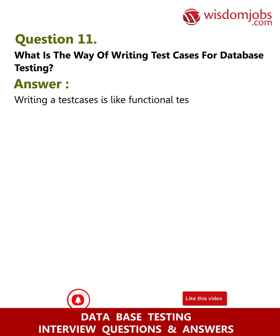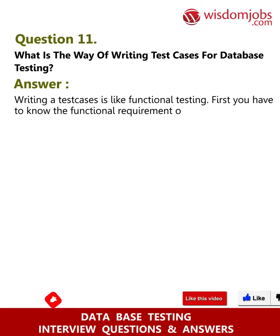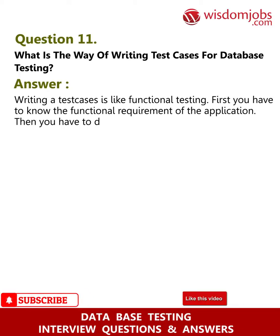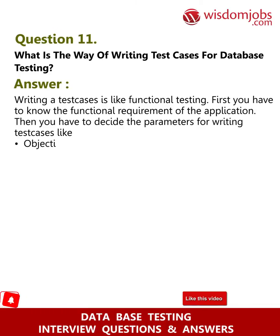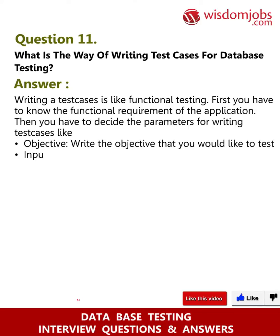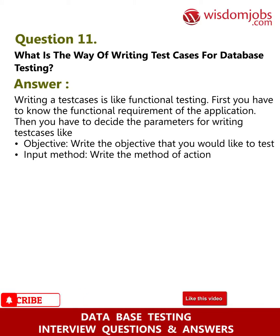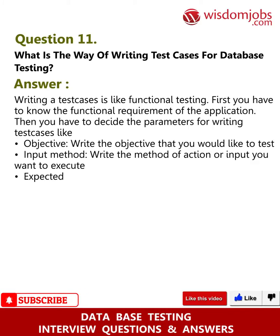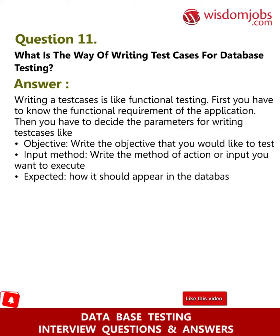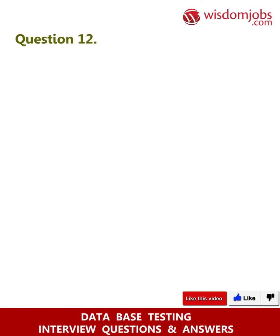Question 11: What is the way of writing test cases for database testing? Answer: Writing test cases is like functional testing. First, you have to know the functional requirement of the application. Then decide the parameters for writing test cases — objective: write what you would like to test; input method: write the method of action or input you want to execute; expected: how it should appear in the database.